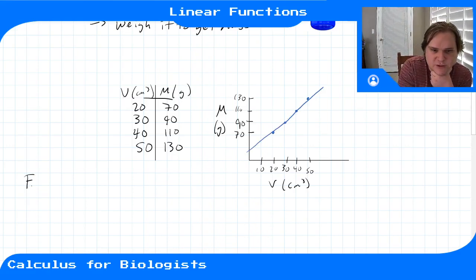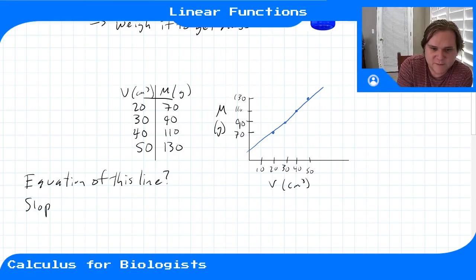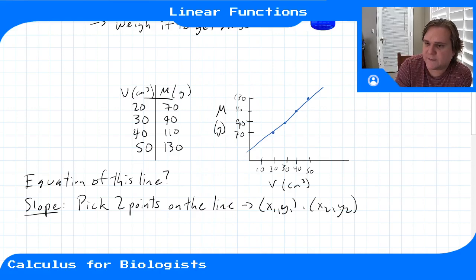So how do we get the equation of this line? So to find the equation of the line, we first have to compute the slope. And to compute the slope, we're gonna pick two points on our line, or two of our data points. Let's pick x1, y1, and an x2, y2.